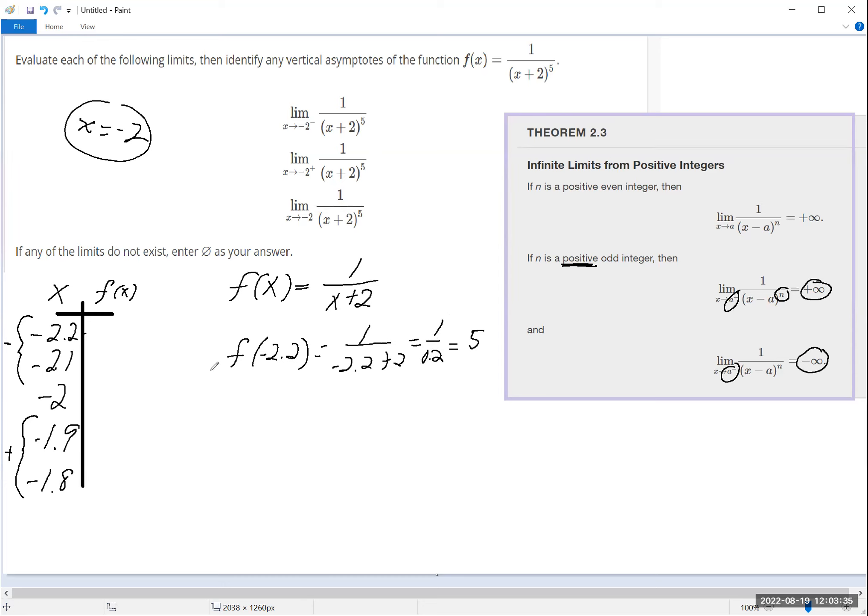Another way to think about it is there are five 0.2s inside 1. And then if I plug in negative 2.1, so I'm approaching negative 2 from the left, then I'm dealing with negative 2.1 plus 2, which is 1 over 0.1, and you get 10.